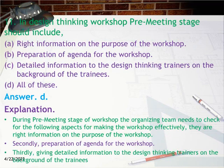Question 11: In Design Thinking Workshop, the pre-meeting stage should include: 1. Write information on the purpose of the Workshop. 2. Preparation of Agenda for the Workshop. 3. Detailed information to the Design Thinking trainers on the background of the trainees. Answer: D. All of these. Explanation: During the pre-meeting stage, the Organizing Team needs to check for: right information on the purpose of the Workshop, preparation of Agenda for the Workshop, and giving detailed information to the Design Thinking trainers on the background of the trainees.